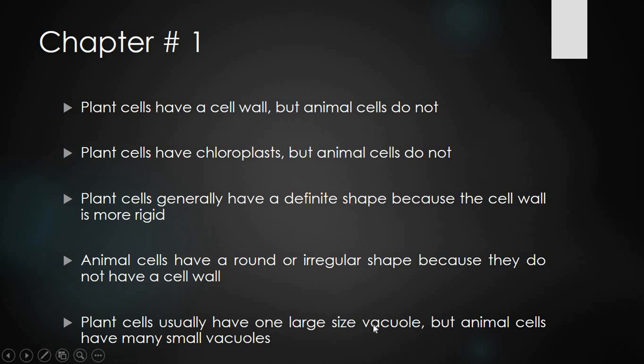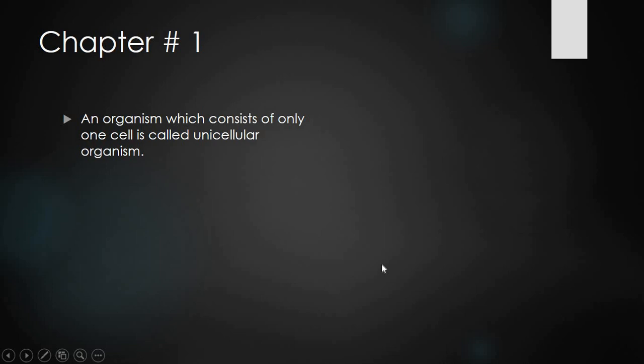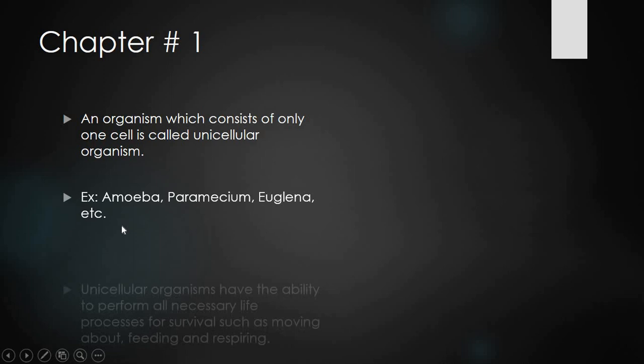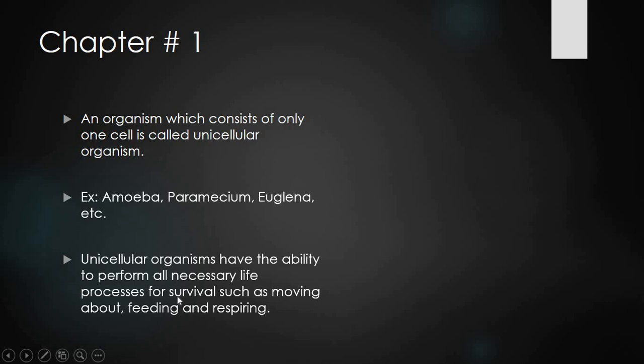An organism which consists of only one cell is called a unicellular organism. Examples include amoeba, paramecium, euglena, etc. Unicellular organisms have the ability to perform all necessary life processes for survival, such as moving about, feeding, and respiring. Even a single cell performs all these functions.